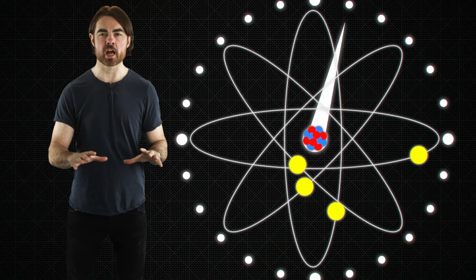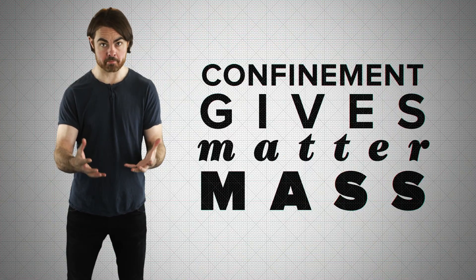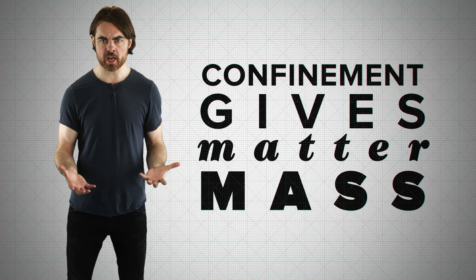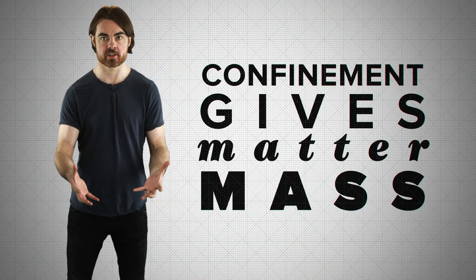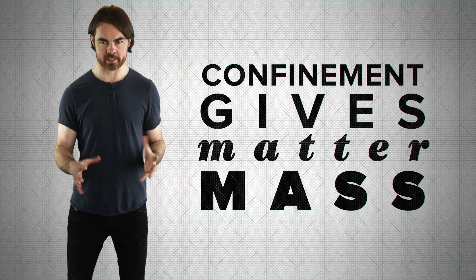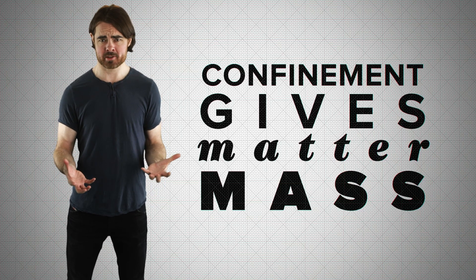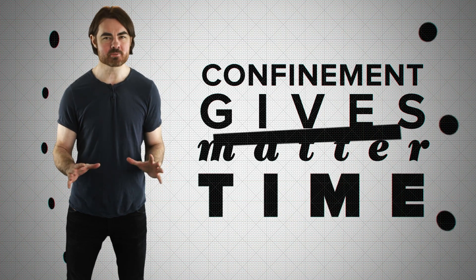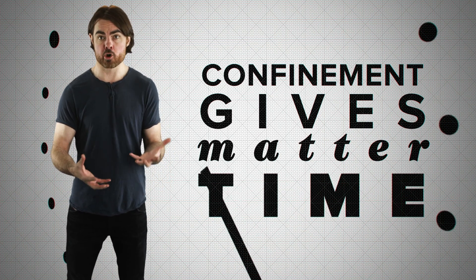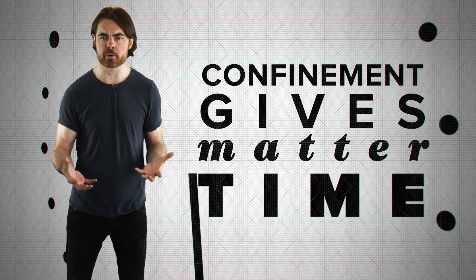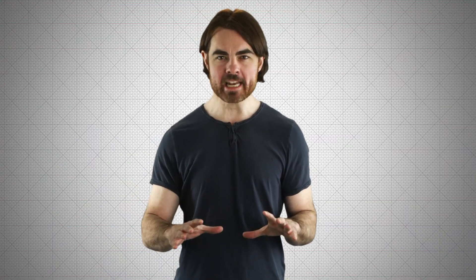So the confinement of light speed particles gives matter mass. In fact, this confinement, this bundling of energetic moving parts, is what makes it matter. But now it looks like this same bundling of light speed particles can also give matter time. Atoms feel time in their internal evolution, similar to our own perception of the changing patterns in our brains. But what is it about not traveling at the speed of light that allows matter to have structure and to change?